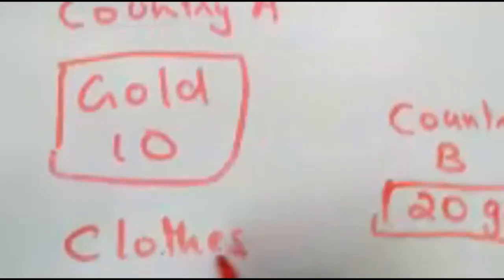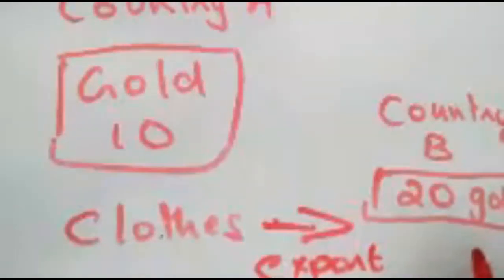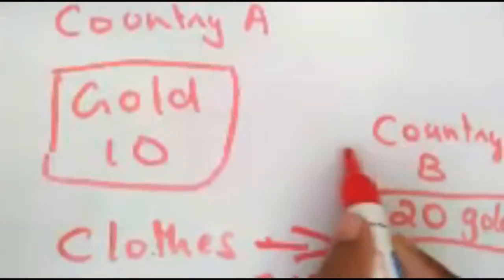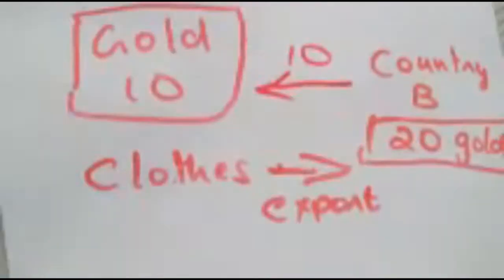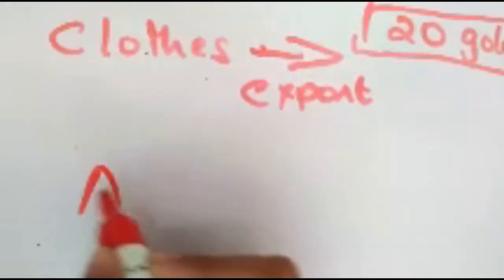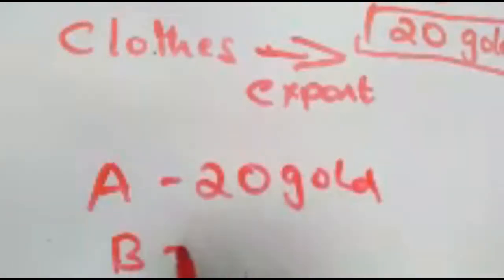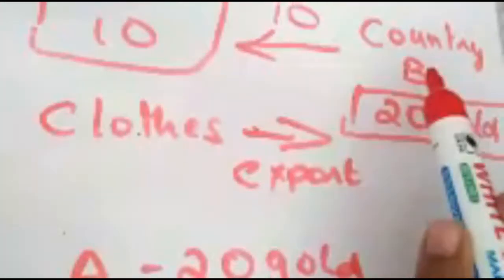Country A will export these clothes to Country B. In return, Country B will have to pay gold — suppose Country B is paying 10 gold coins. What will happen in total? Country A will now have 20 gold coins and Country B will have 10 gold coins.